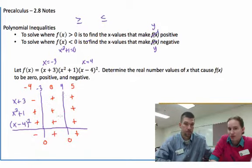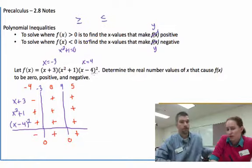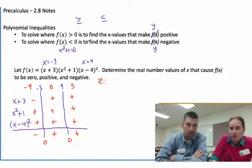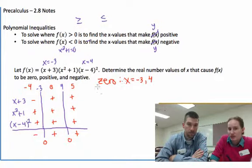So if we want to know where these numbers are zero, positive, and negative, we just found that out because we're not interested in the exact value, we're interested in the sign. So at negative three, it's zero. At four, it's zero because we found the zeros up there. So if we're listing out where it's zero, there's two places that happens at x equals negative three and four. And that's the only place it equals zero.